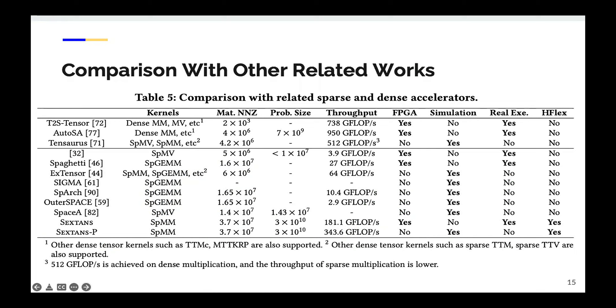We also compare Sextense accelerator with other related dense and sparse accelerators. The matrix non-zeros and problem size supported by Sextense are larger than all the other accelerators. If we look at the throughput, the three accelerators, T2S-Tensor, AutoSA, and Tensaurus have the highest throughput because their workloads are dense applications. While Tensaurus is able to support sparse kernels, the 500 giga-flops performance is achieved on dense kernels. For the sparse accelerator, we see that Sextense has the highest throughput.